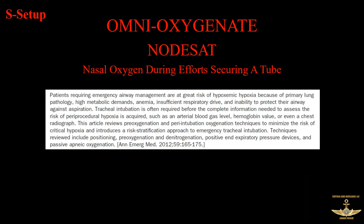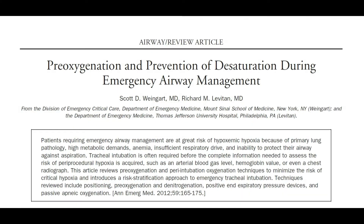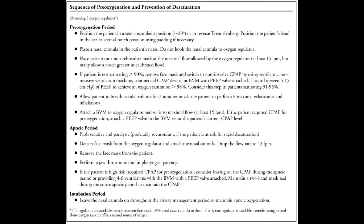Hopefully by now you're doing some kind of apneic oxygenation whenever you do a drug-assisted intubation, a rapid sequence induction, or what I like to call a goal-oriented anesthesia for the purpose of placing an advanced airway. Apneic oxygenation has really been the standard of care for probably the last five years now, where you place a regular nasal cannula running at 15 liters a minute on the patient before and during the laryngoscopy to prevent desaturation and anoxia — and we've proven over and over again this works and works really well.